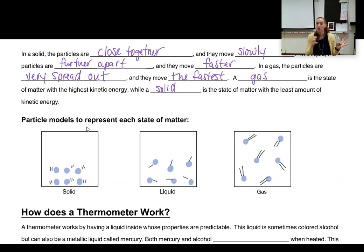So, this is the particle model showing the difference in spacing and the difference in movement of each of our states of matter because of the difference in temperature and kinetic energy.